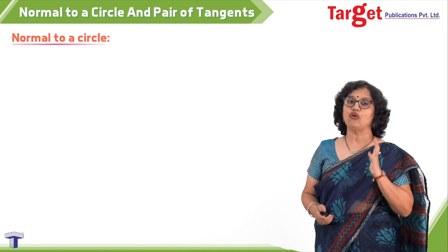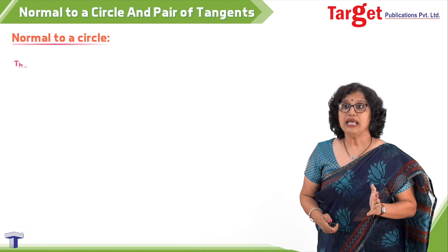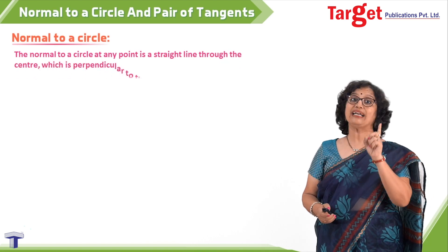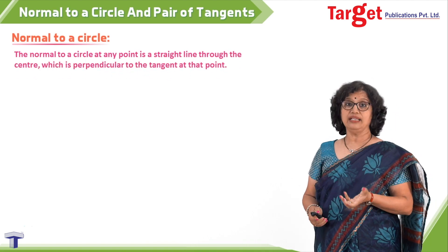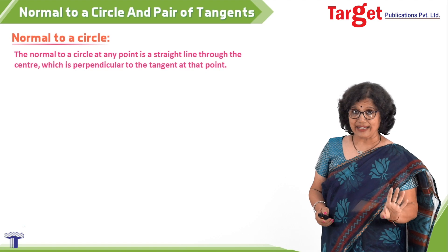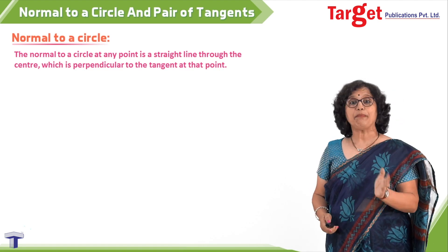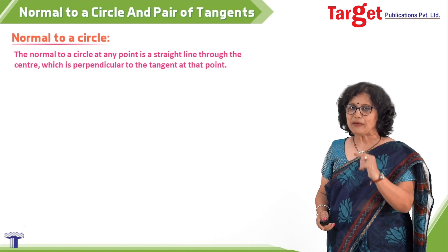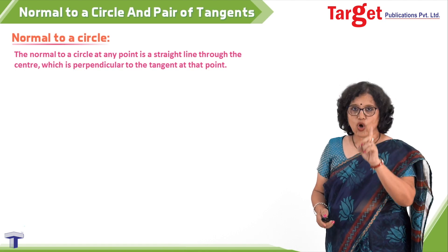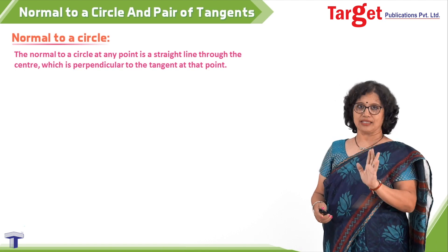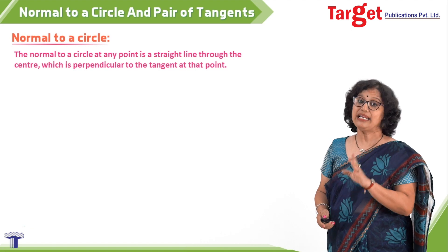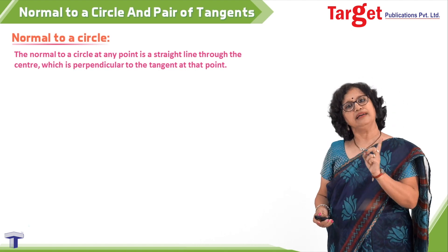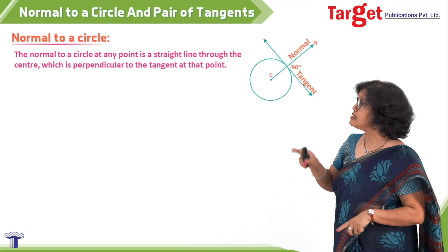We must understand what we mean by a normal. I define the normal at a point to the circle as a line through the center, and it has to be perpendicular to the tangent. So normal to the circle at a point is a line through the center and perpendicular to the tangent.